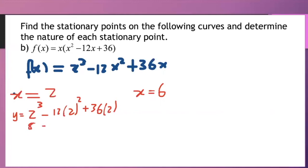2 squared is 4 and 4 times 12 that's 48 and 36 times 2 that gives me 72. So calculating this I will say 8 minus 48 that's minus 40 plus 72 to give me 32. So therefore my first stationary point is x is 2 and y is 32.